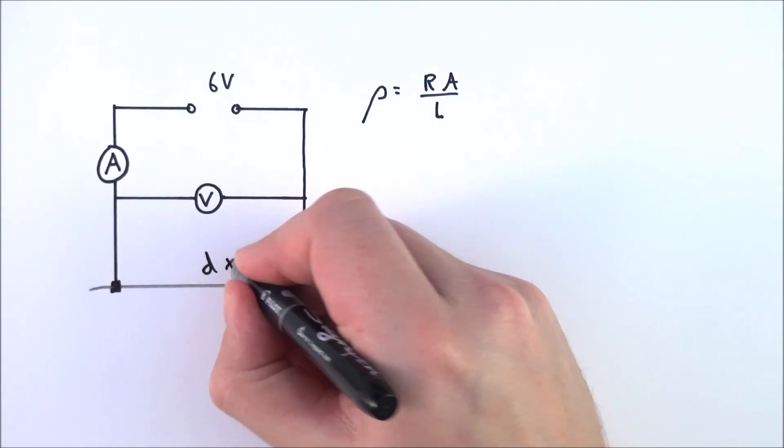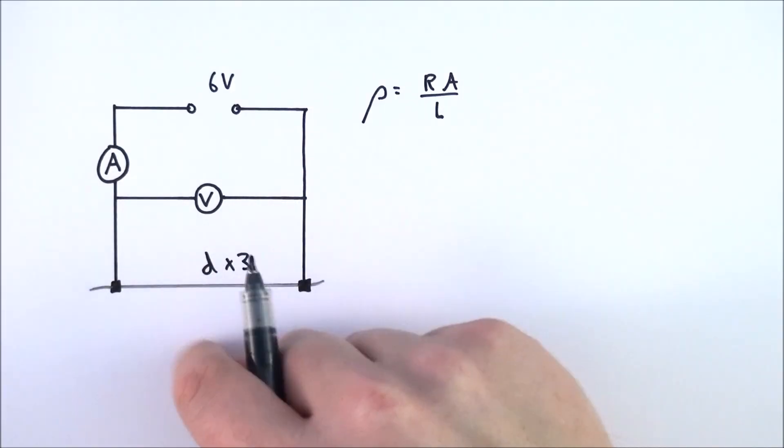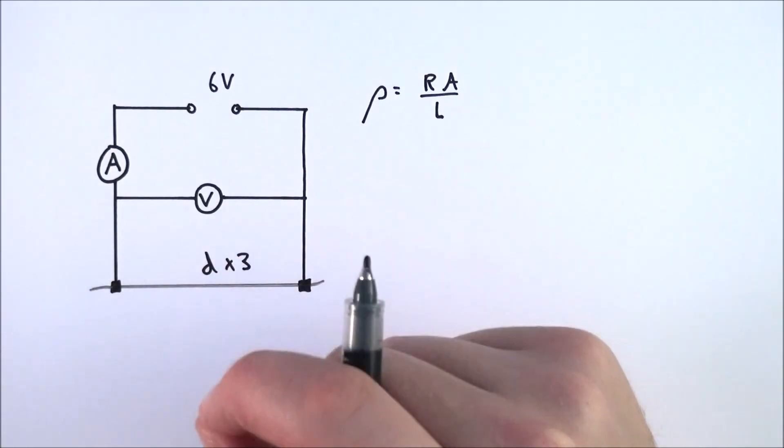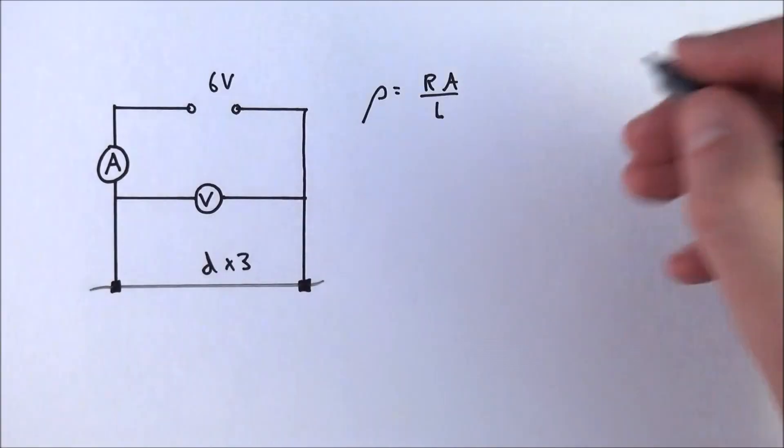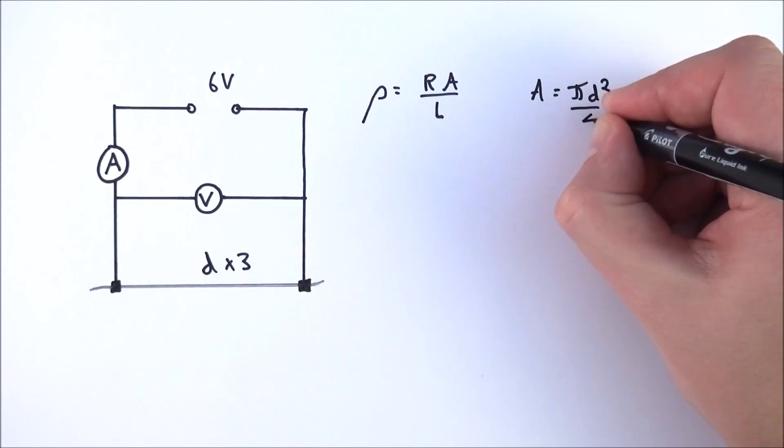When you measure the diameter, you need to do it in at least three different places using a micrometer or vernier calipers. You get this measurement which is going to be very small. Make sure you convert it to meters, and then remember that the area is equal to pi r squared, or pi d squared over four.